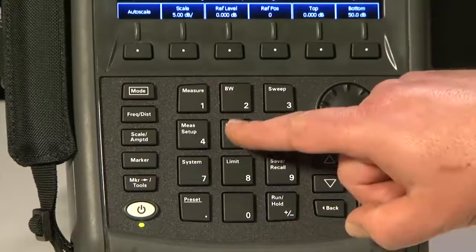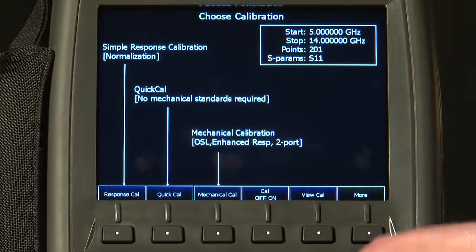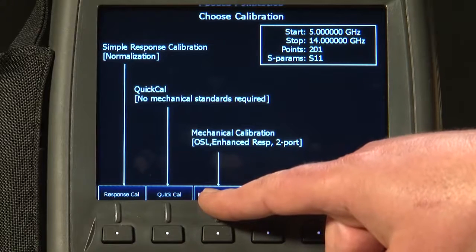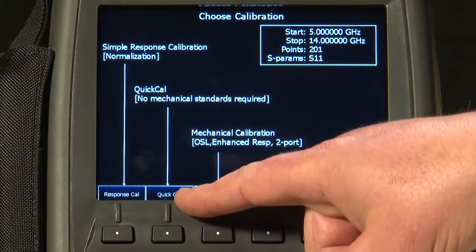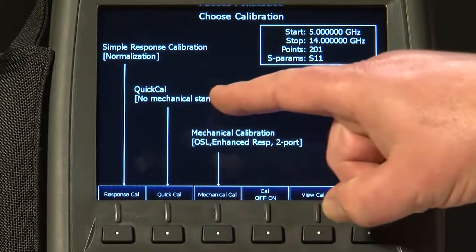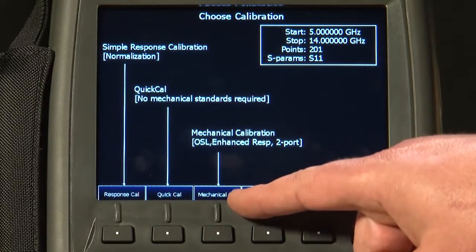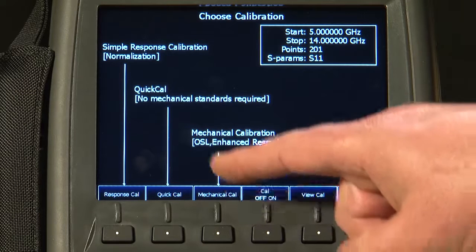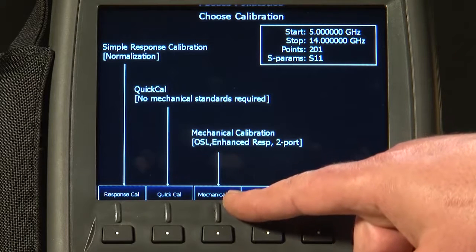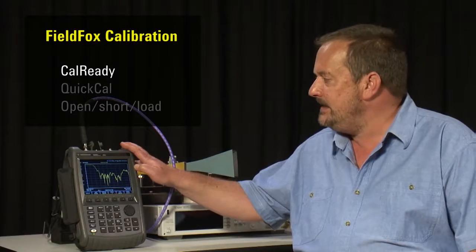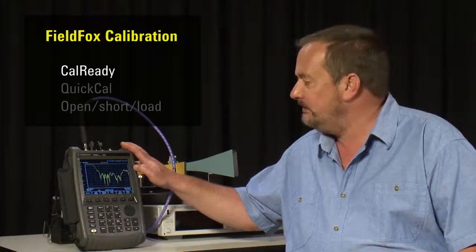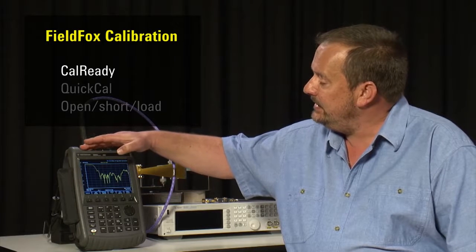Well, if I press the CAL button, you will see we have a number of options for calibration: a simple response CAL, a quick CAL which I will talk about in a moment, which allows us to do a calibration with no mechanical standards required, or of course, we can do a full open, short load calibration if we wish. But every FieldFox is pre-calibrated when it leaves the Agilent factory at this reference point here.